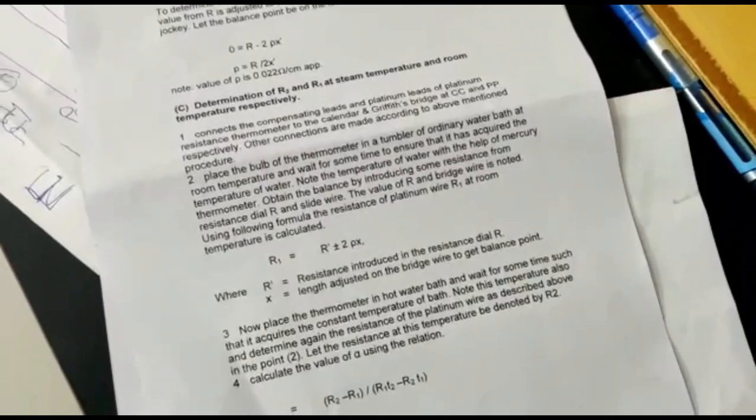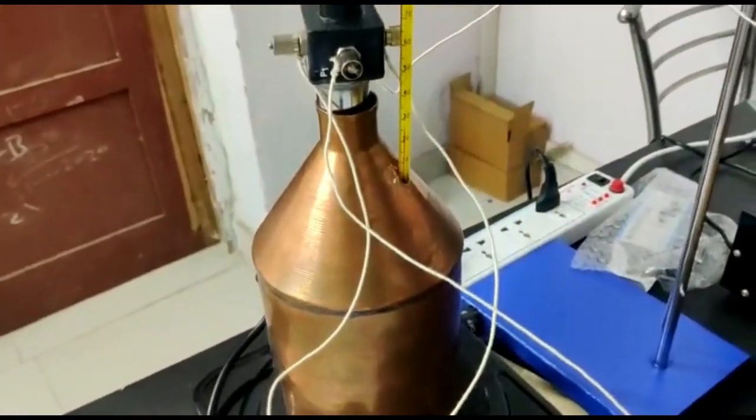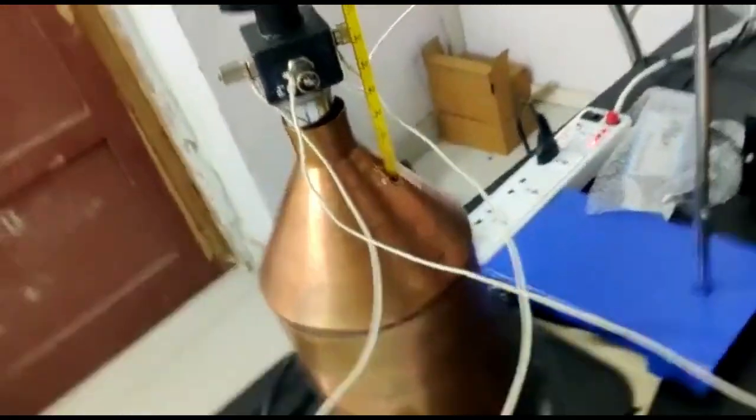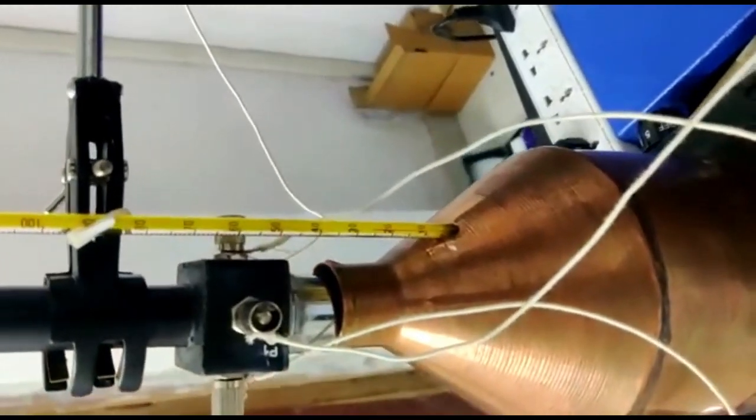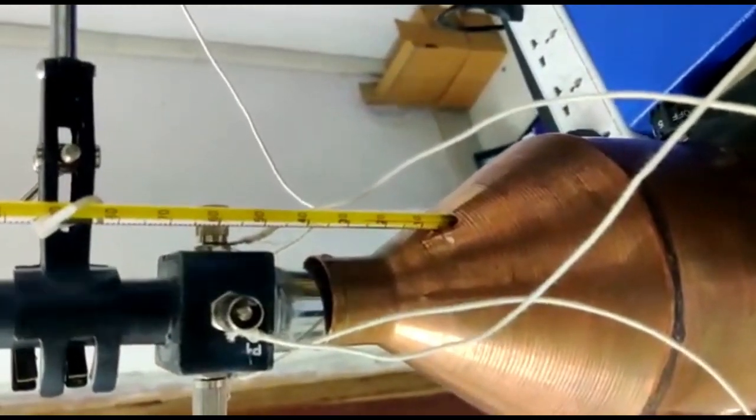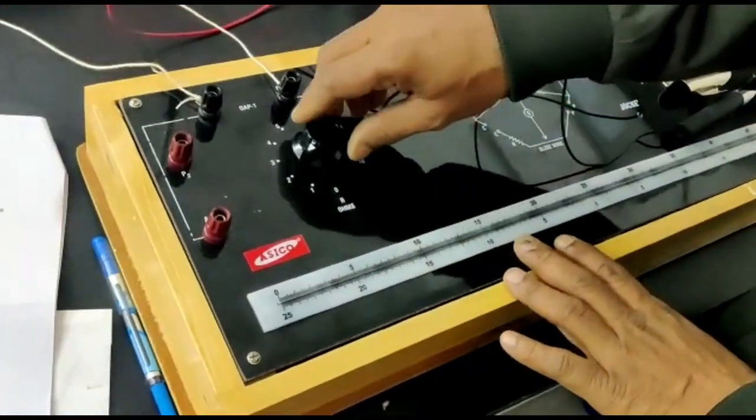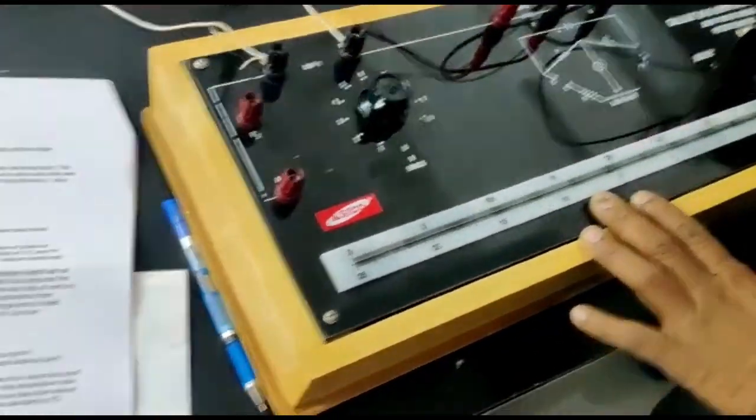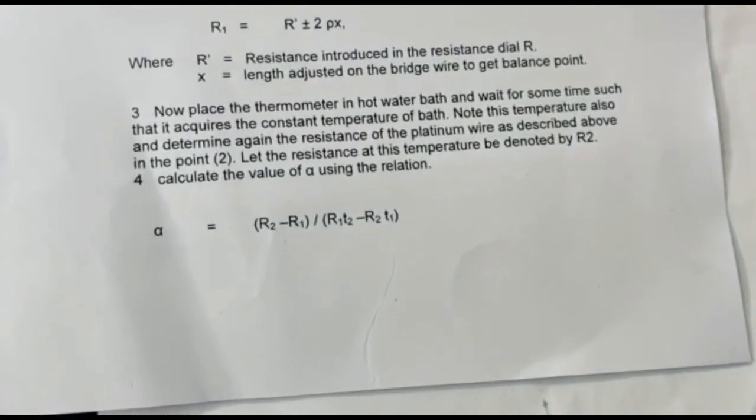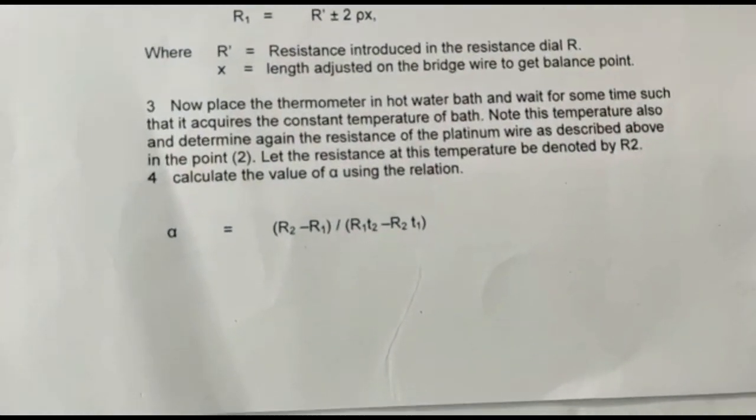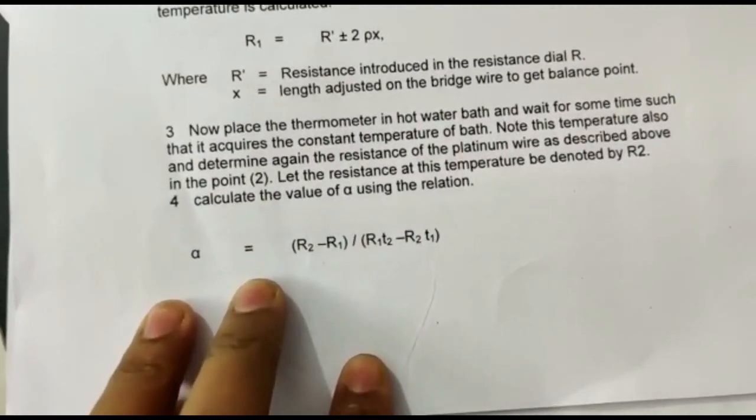R2 at steam temperature. Heat the platinum resistance thermometer and wait for half an hour until the temperature rises up to 50 or 60 degrees Celsius. Calculate the value of R2 with the same procedure as R1, and put the value of R2 and R1 into the formula to calculate the value of alpha. Thank you.